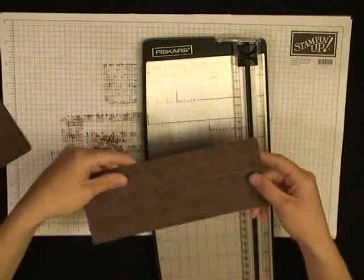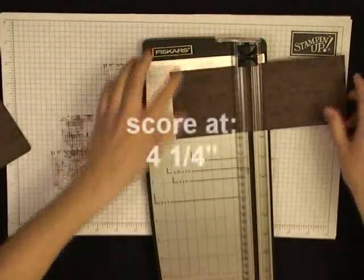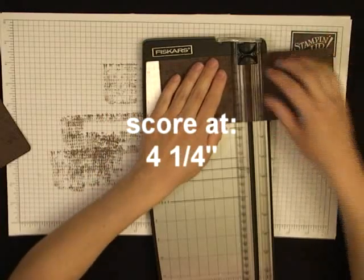And on the piece of card stock that is eight and a half by three and a quarter you want to score it right in half at four and a quarter.